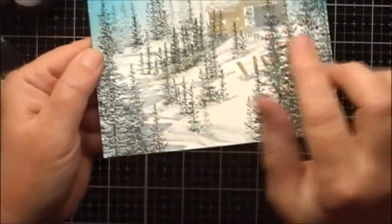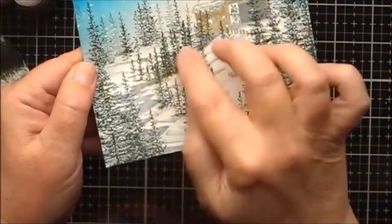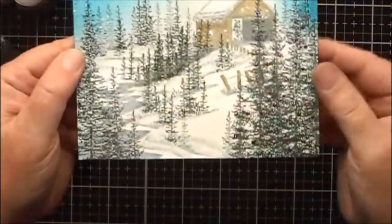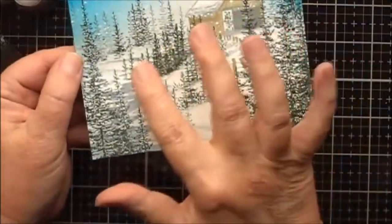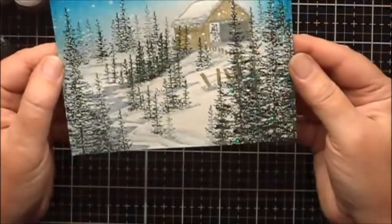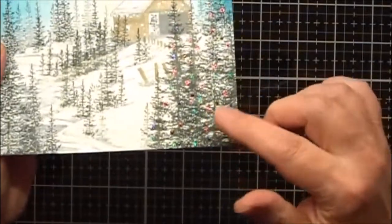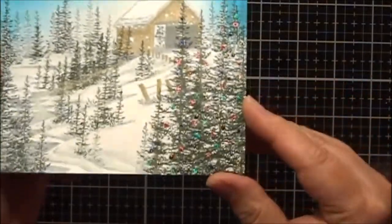And I couldn't quite stamp over the Wink of Stella very well, but it does kind of help hide it from under there. And you can see the little ornaments on the trees here. The lights are the ornaments.